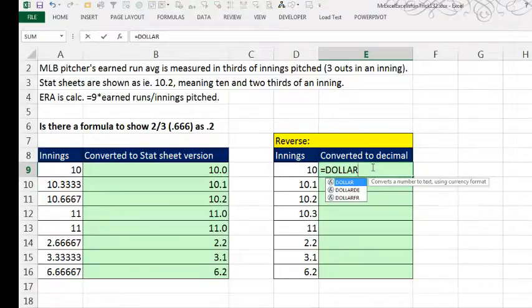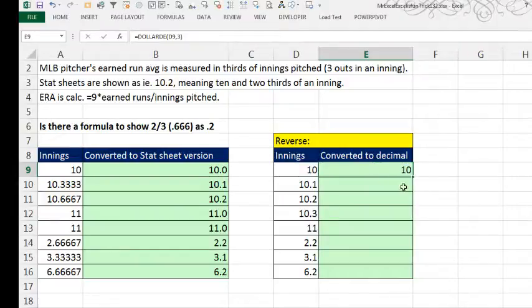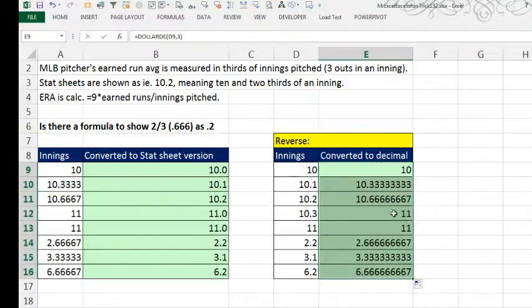This is unbelievable, a function to solve this exact problem exactly like the person wants it and to go back equal DOLLAR.DE. That comma and thirds will go back the other way so that they had two functions built in that do this exact thing. Now, they created it for stock traders but hey, it works for baseball statisticians as well. So, all the Moneyball, the people who are really doing that Moneyball statistics, they have a solution here.